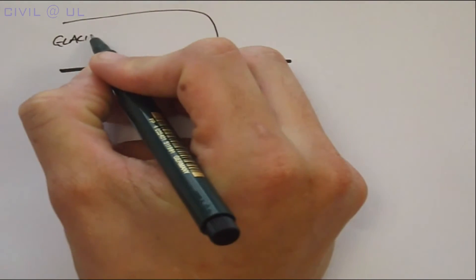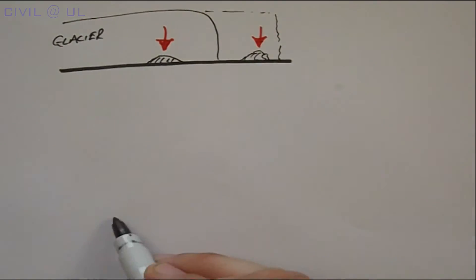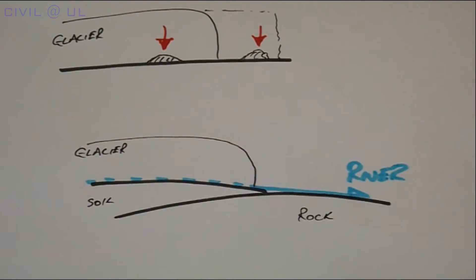For example, when the weight of material carried by the glacier becomes excessive, it is either just dumped or, in the case of subglacial river flows, is deposited in a distinct layering process.